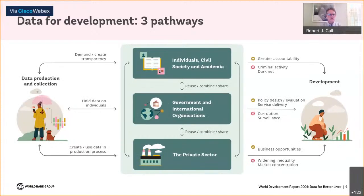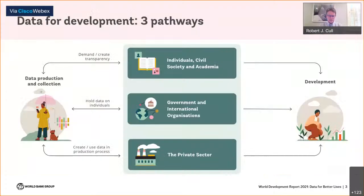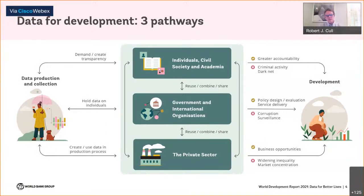It's no secret why this topic was chosen for the WDR. There's been an explosion of data produced and used by various actors, and the report is anchored by a conceptual framework focusing on three groups: data received and generated by individual civil society and academia; data collected and analyzed by governments and international organizations; and data increasingly used in and produced as a byproduct of the production processes of firms.